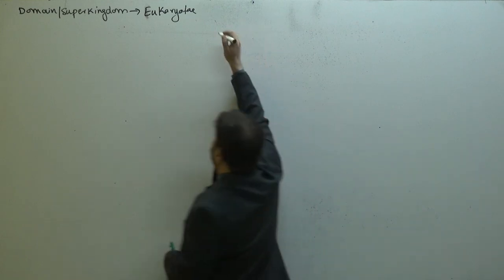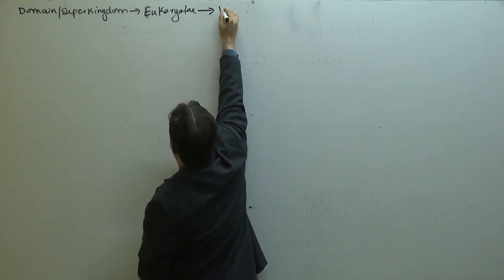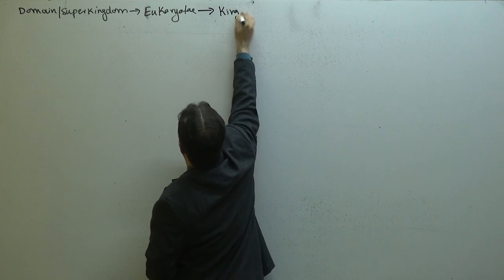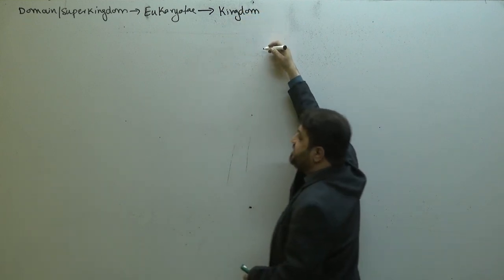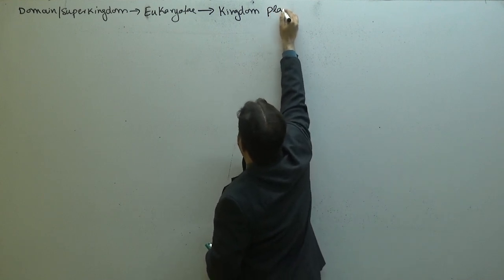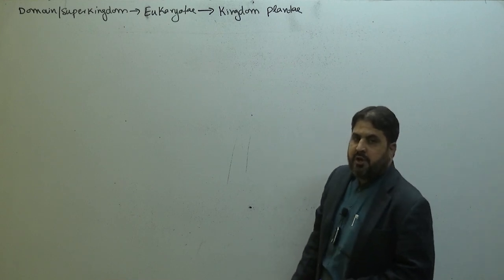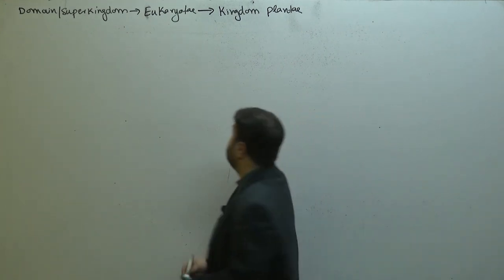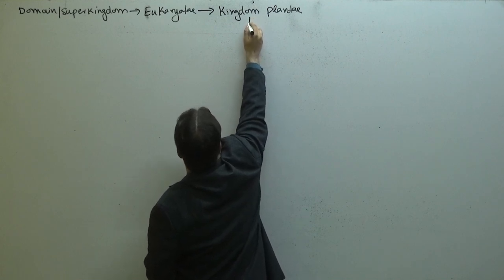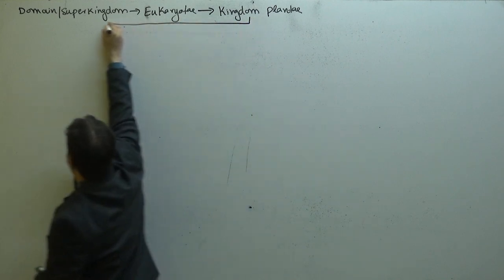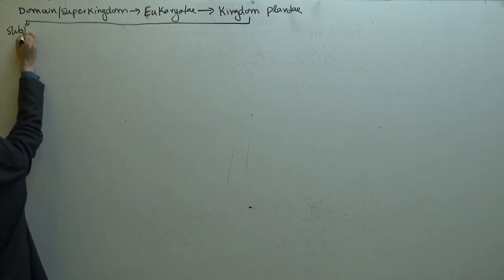In domain Eukaryota we have four kingdoms: Kingdom Fungi, Kingdom Protista, Kingdom Plantae, and Kingdom Animalia. Here we are going to discuss Kingdom Plantae, which according to the old classification system is divided into two sub-kingdoms.